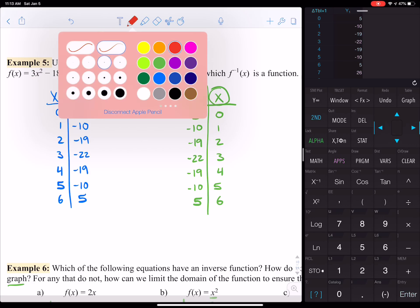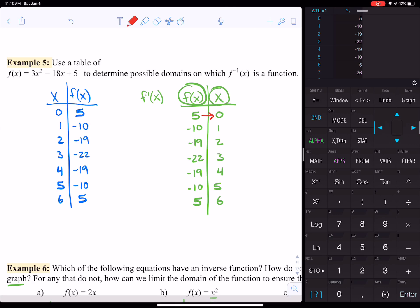So looking at each one, 5 goes with 0. But then you can see down here at the bottom that it also goes with 6. So right away, we can tell this would not be a function, but it asks you to determine possible domains on which it is a function.